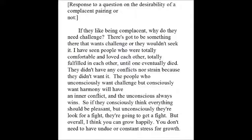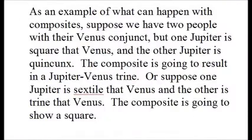As an example of what can happen with composites — remember, they are midpoints — suppose you have two people with Venus conjunct in their charts, one Venus on the other. Now suppose Jupiter in one chart is square that Venus and in the other chart it's quincunx. The composite is going to give a Jupiter-Venus trine. Or suppose one Jupiter is sextile that Venus and the other is trine that Venus — the composite is going to give a square. And they'll say the square is positive, they'll twist it to fit if they know the circumstances. I say a square is a challenge, whether it's Jupiter or Venus or anything else — a square is a challenge, which doesn't mean it has to be negative, but you have to work with it.